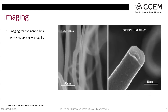Another comparison between SEM and HIM: to the left is a scanning electron micrograph at 30 kV, and to the right is a HIM micrograph of carbon nanotubes. At higher SEM energies, the beam passes through the nanotube and most surface features are lost. With the HIM, you can see superb surface details, texture, and roughness.